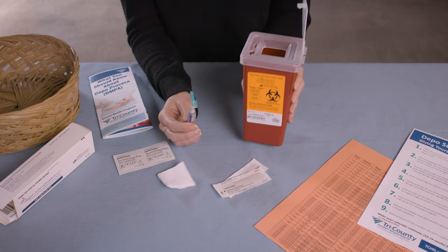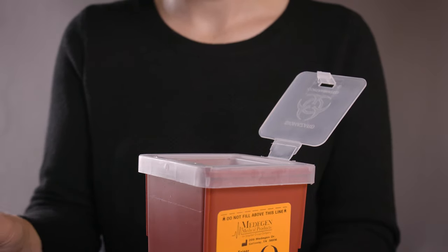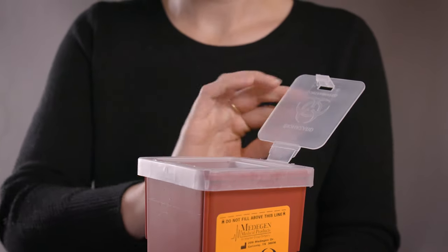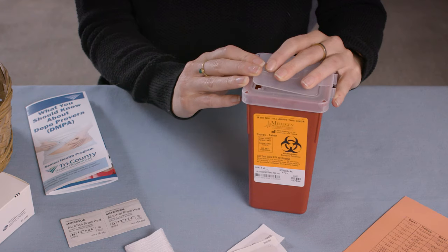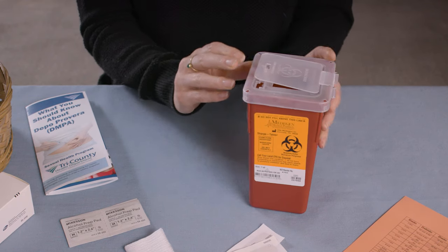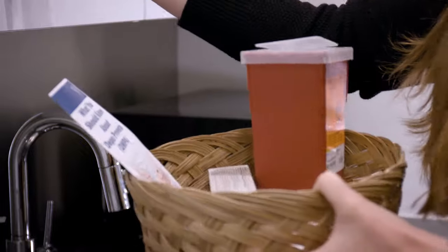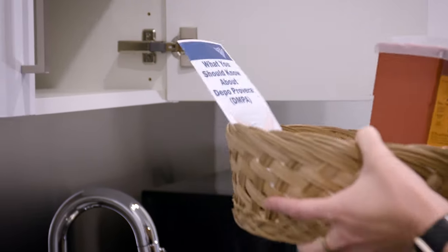Next, your empty used Depo Sub-Q syringe and needle should be placed into a safe container. You can use the same container when you need to dispose of your next Depo Sub-Q syringe in three months. Store the container in a safe place away from pets and children.